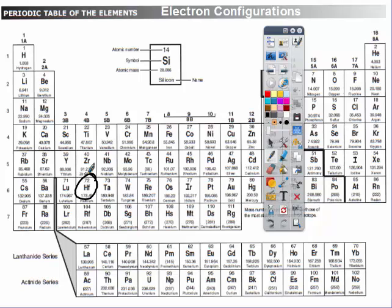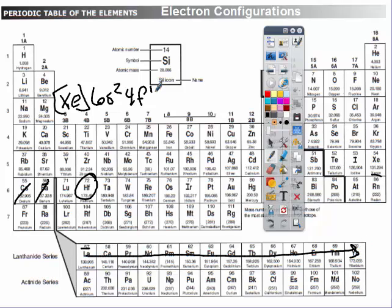Hafnium is here. So the noble gas before it is xenon again. So xenon, and then 6s2. Watch those numbers, 56, then 57. So 4f, go all the way through the f's, which is 14. And then it's 5d, because the d's are 1 less than the period number, 2.